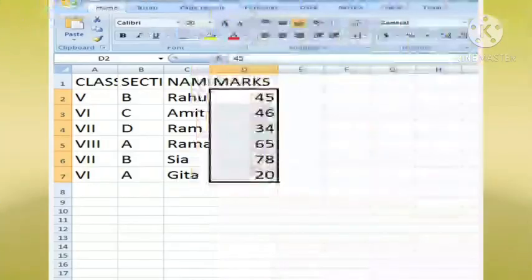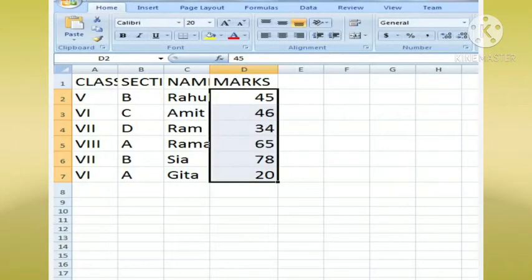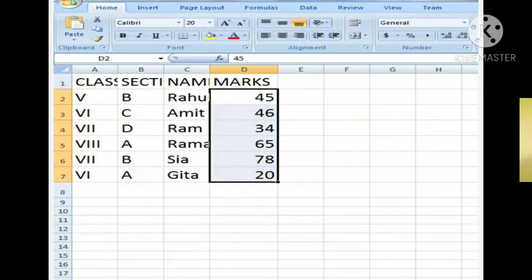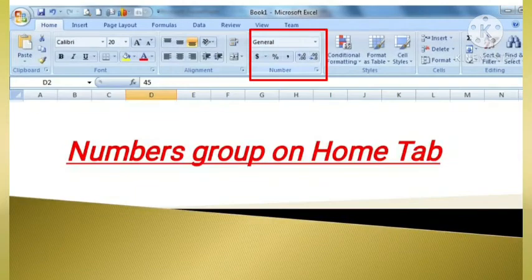In this image we can see the cells whose data is to be formatted is being selected. In this image on the menu bar, you can see numbers group on home tab which is being shown with a rectangular red color box.